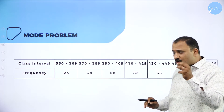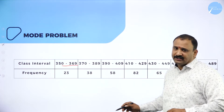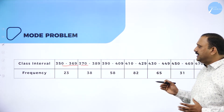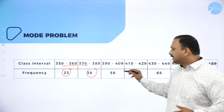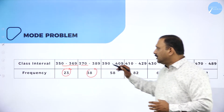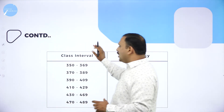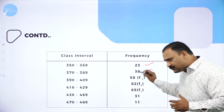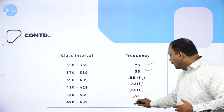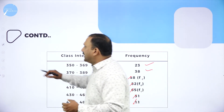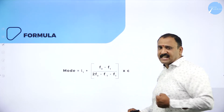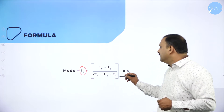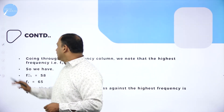Now we have a problem with interval data — the intervals are not continuous because one ends at 369 and the next starts at 370. The data given includes values like 23, 38, and other frequencies for each observation range. We write it down: 350–369 has frequency 23, 370–389 with corresponding values, and so on. The formula to calculate mode for such a series is: l1 + [(f0 − f1) / (2f0 − f1 − f2)] × c.